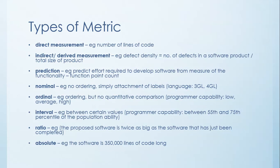The next one is ratio. The proposed software is twice as big as the software that has just been completed. Where you actually say the size of something in terms of the size of something else. So it's a ratio.